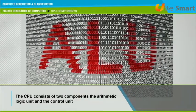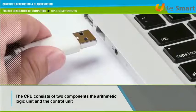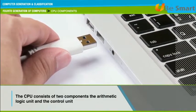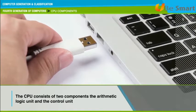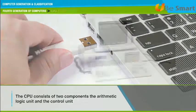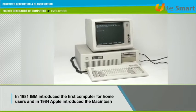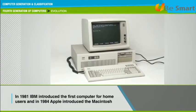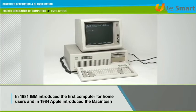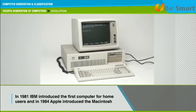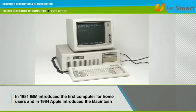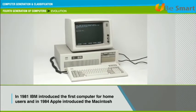The CPU consists of two typical components: the arithmetic logic unit, which performs arithmetic and logical operations, and the control unit, which extracts instructions from memory and manipulates them. In 1981, IBM introduced the first computer for home users, and in 1984, Apple introduced the Macintosh. Microprocessors are also used in desktop computers and in many areas of life.